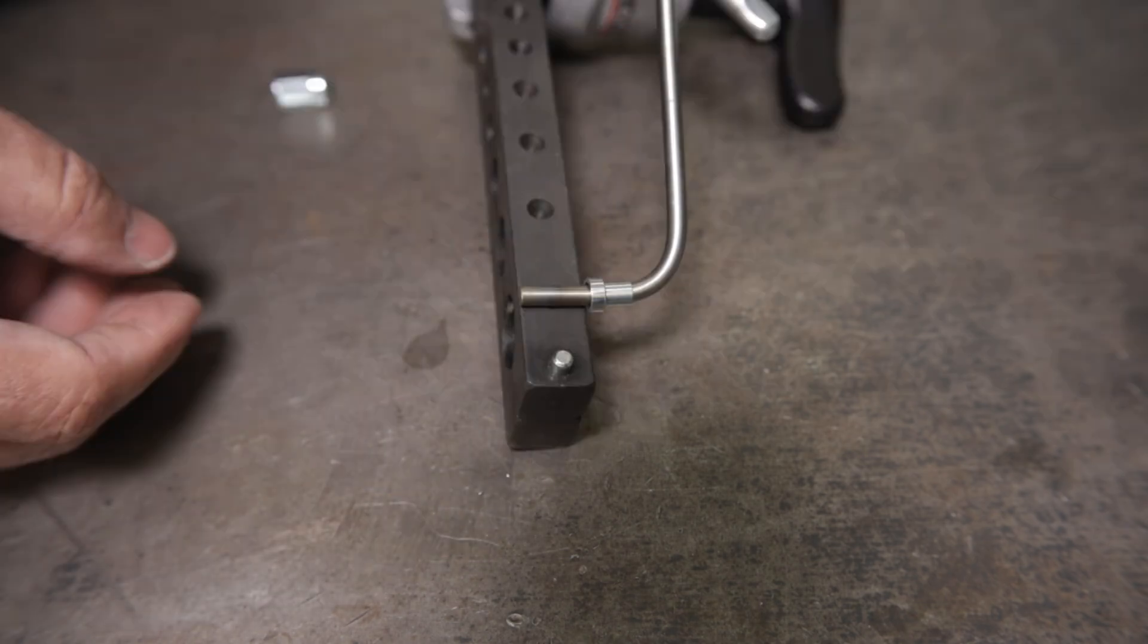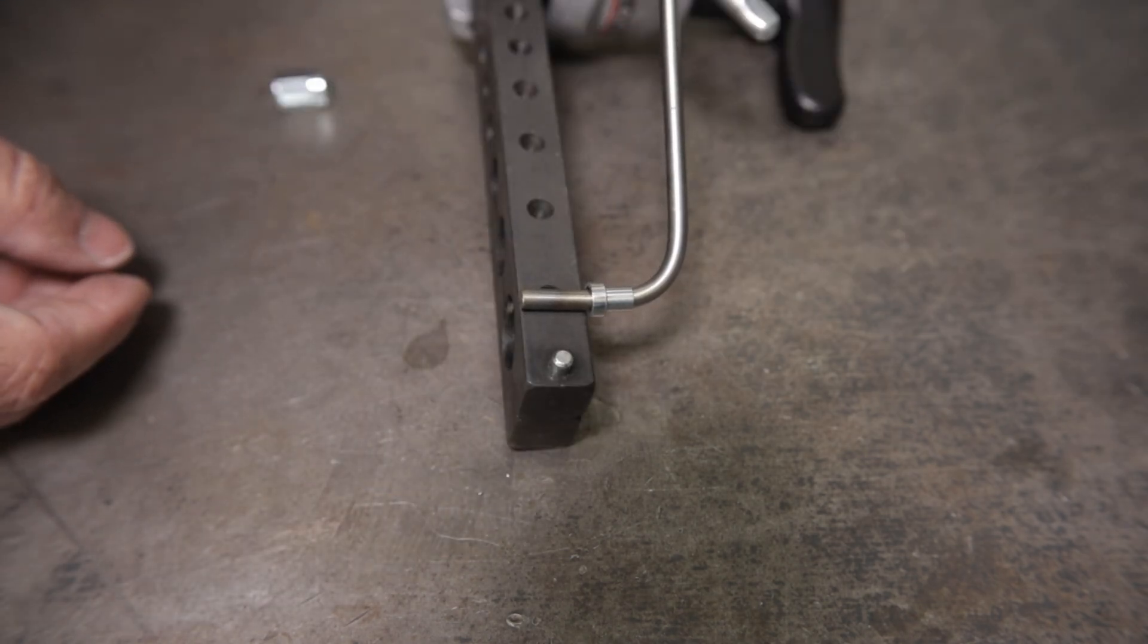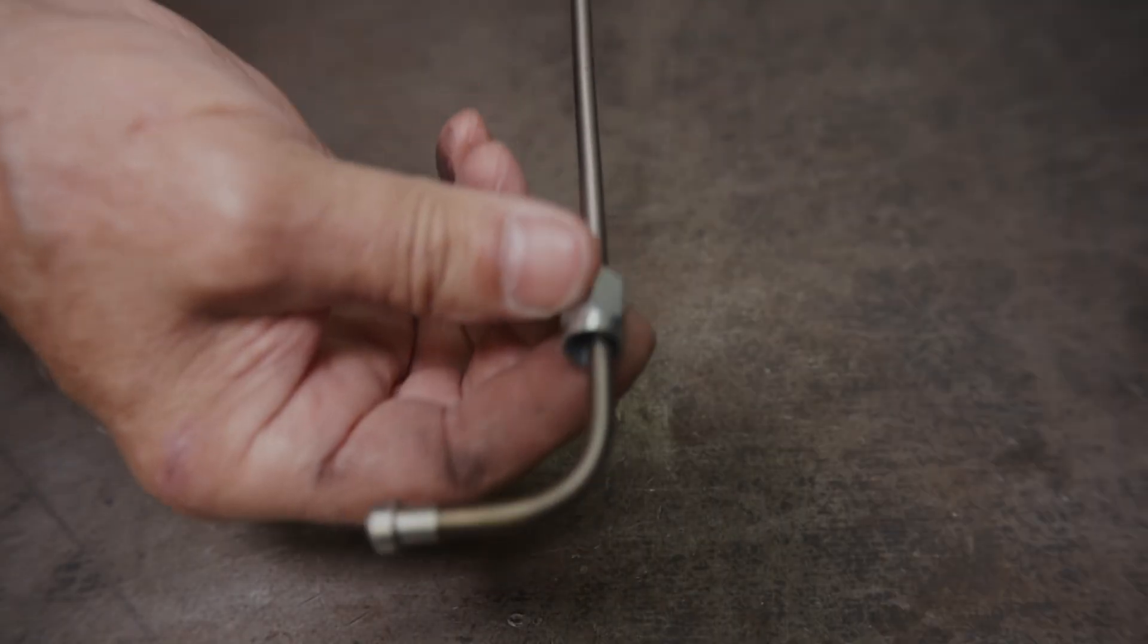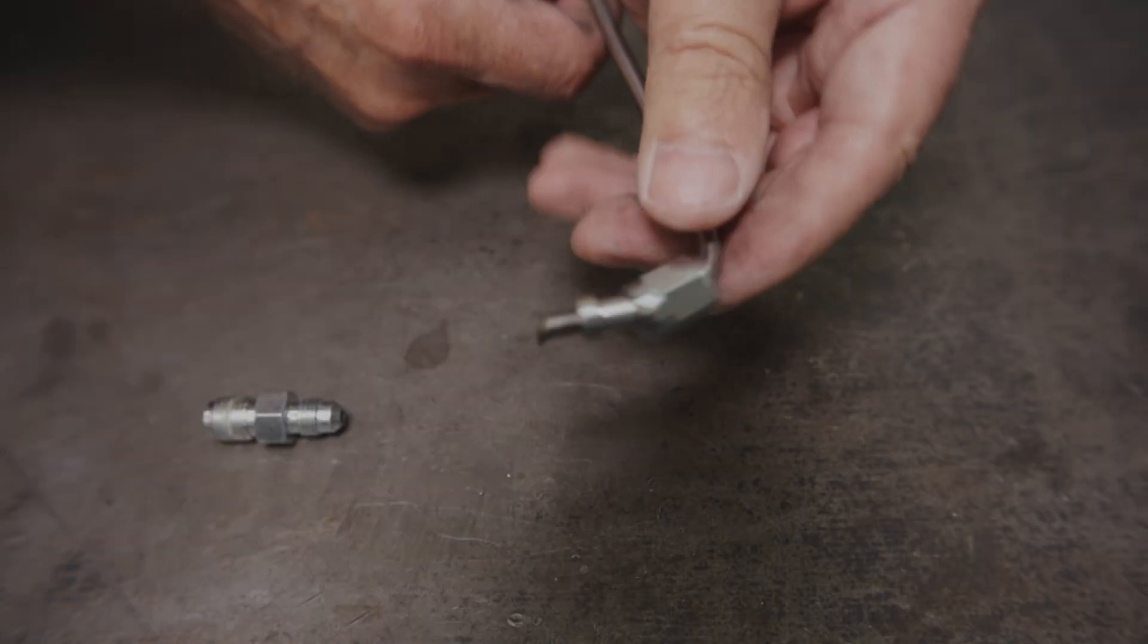One more thing on this subject: you can only start the line radius so close to the fitting as the tube sleeve and flaring tool need a certain amount of room, so plan accordingly.